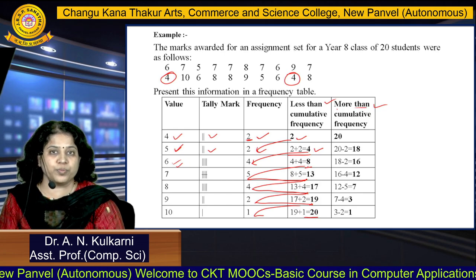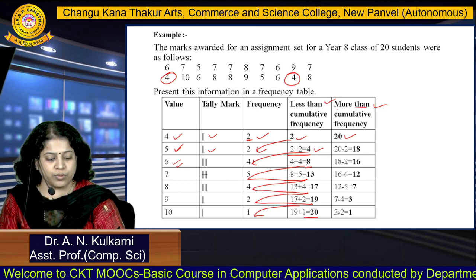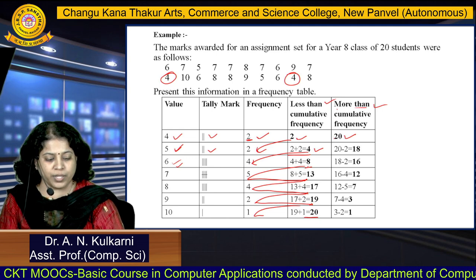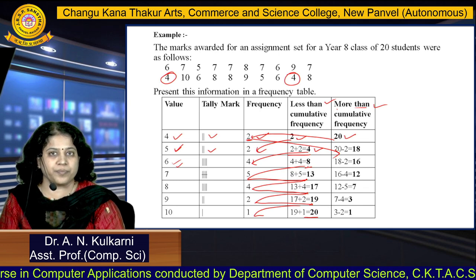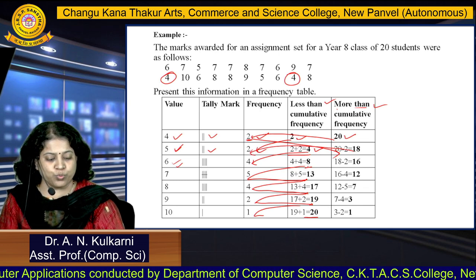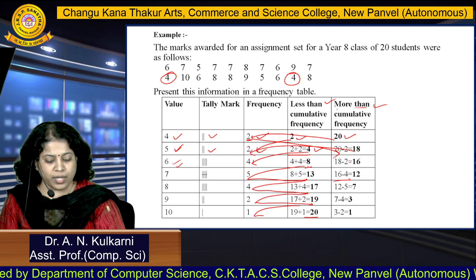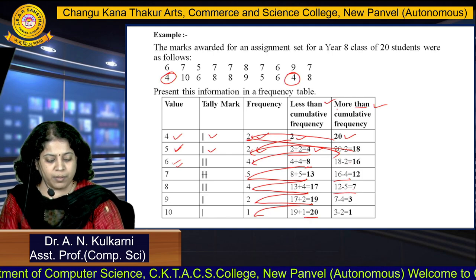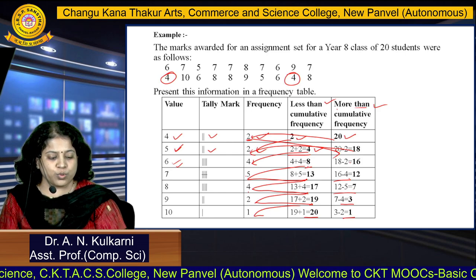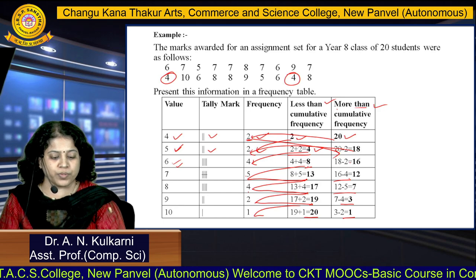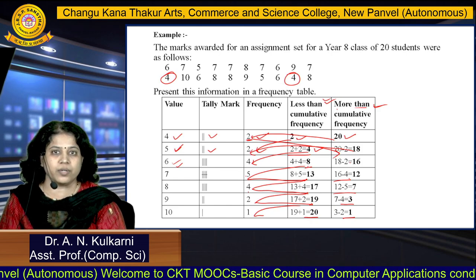For more than cumulative frequency, write down the total frequency 20 first, from highest to lowest, then subtract successively: 20−2=18, 18−2=16, 16−4=12, 12−5=7, 7−4=3, and 3−2=1. In this way we can calculate both less than and more than cumulative frequency for the given data.